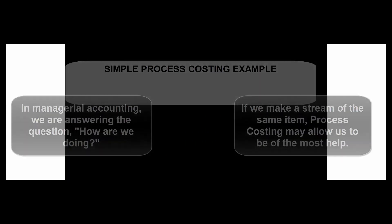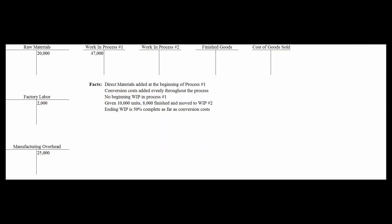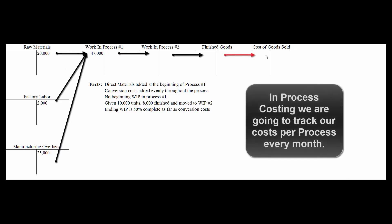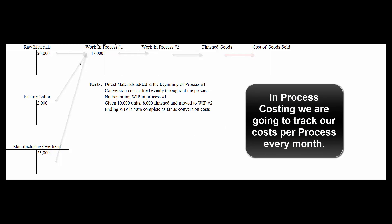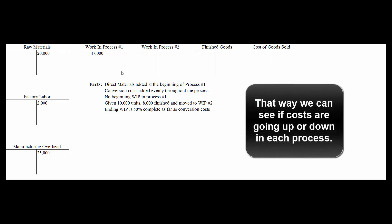Just like job order costing, we're going to take materials, labor, and overhead and move it into work in process, eventually moving into finished goods and cost of goods sold. What's different about process costing is that every month we keep track of costs in each process, so we can tell management that this month costs were down or up in process number one — and management can ask whether that was because raw materials, labor, or overhead was up.